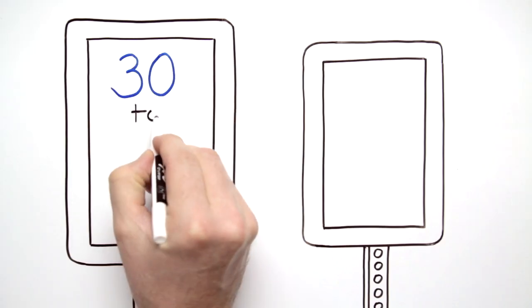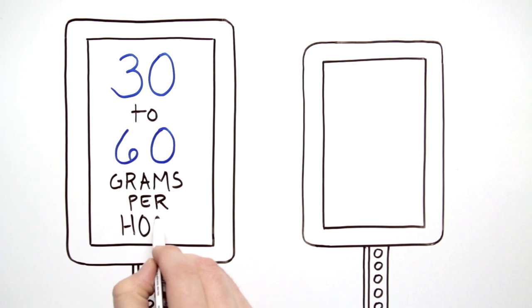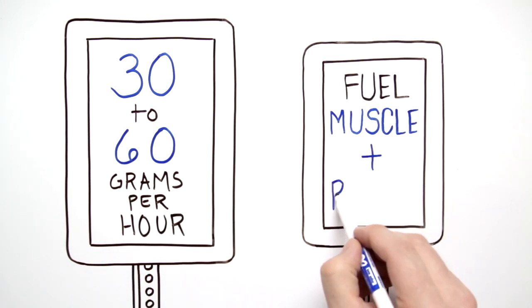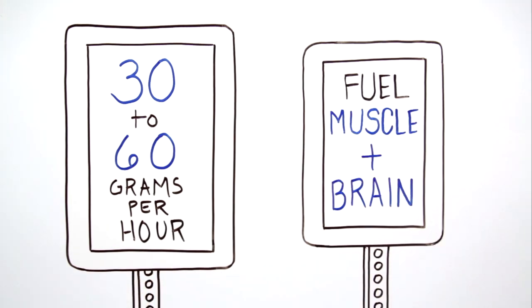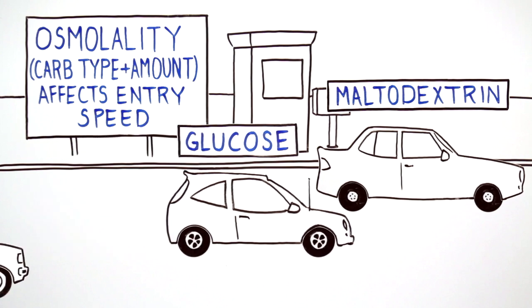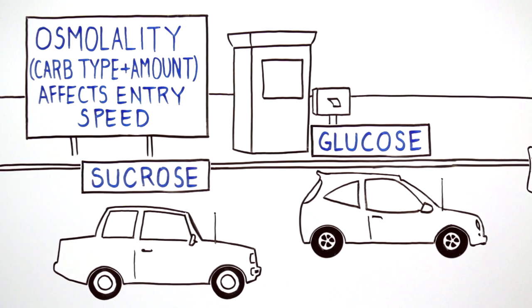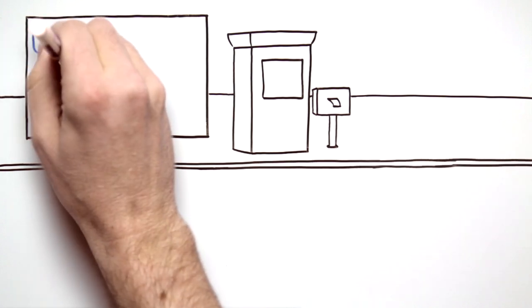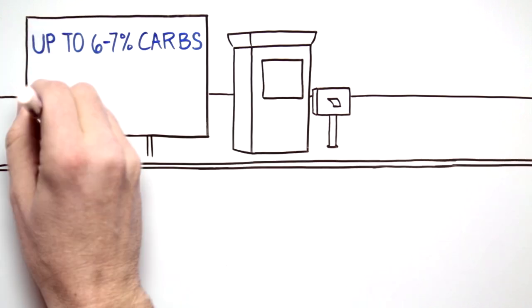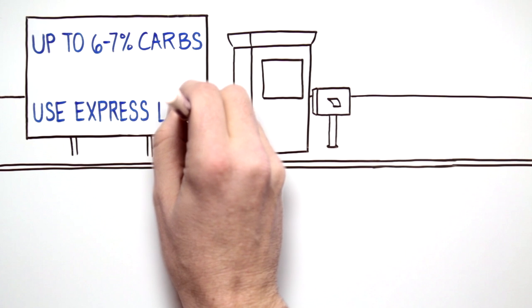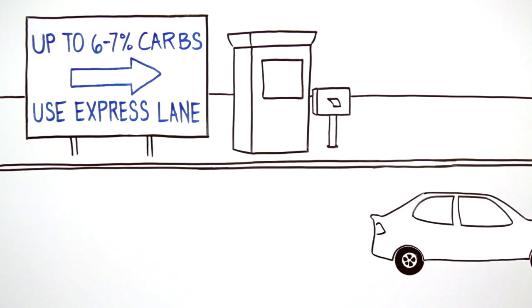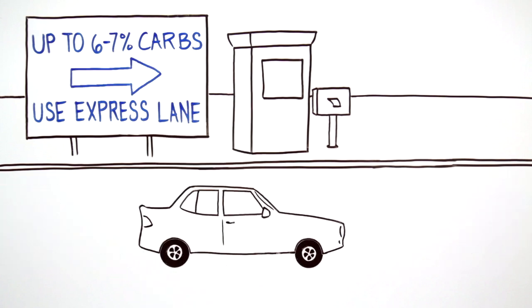Experts recommend consuming 30 to 60 grams of carbohydrates per hour to fuel the muscles and brain during exercise. Maltodextrin and the sugars glucose and sucrose are recommended because they quickly digest and absorb into the bloodstream. A beverage formulated with up to a 6 to 7 percent solution of these carbohydrates is shown to exit the stomach and absorb into the bloodstream as quickly as water.